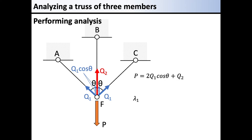We can derive the elongations for each member using the axial forces. Since the members on both sides are located symmetrically, the elongation of both is λ1. The elongation is the product of strain and the length of the member. The stress is the axial force divided by the cross-section area, and the strain is the stress divided by Young's modulus. Using these relationships, the elongation λ1 for the left and right members is given by the corresponding equation.